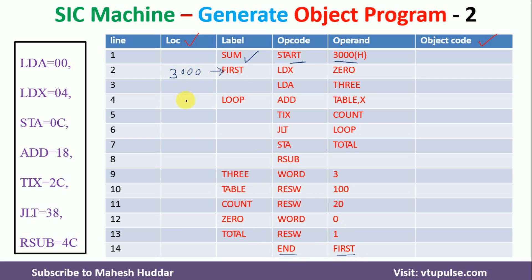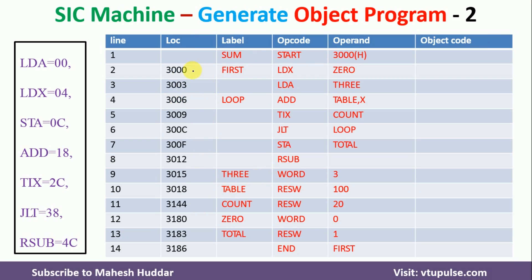Next, I have to assign the location counter for the remaining instructions. LDX, LDA, ADD, TIX, JLT, STA, and RSUB are present in OPTAB and the size of each instruction is 3 bytes in SIC. So I will go on adding 3 to get the values. The next instruction is at 3003, the next at 3006, and so on — 3009, then A, B, C, D, E, F, 10, 11, 12, 13, 14, 15 in hexadecimal.